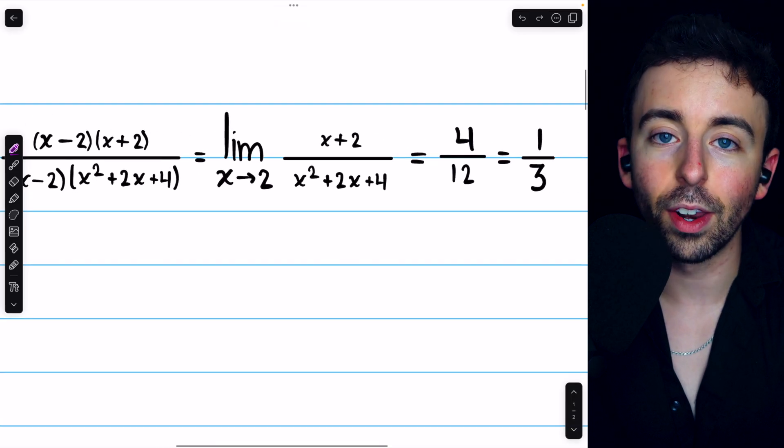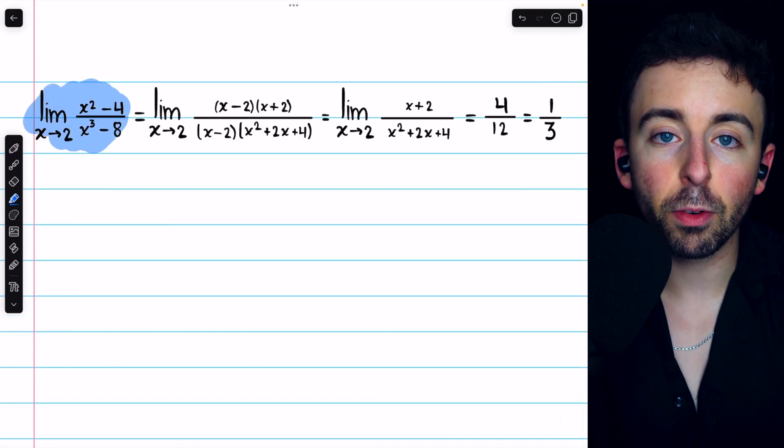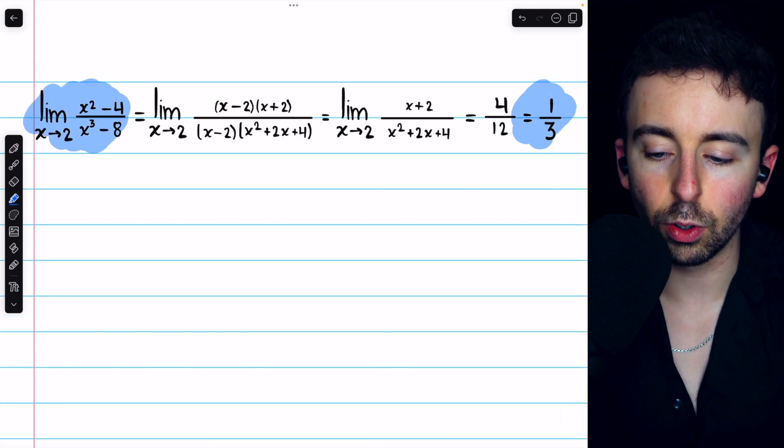Thus, it's 1 third. And so our limit, we find by factoring and canceling, is equal to 1 over 3.